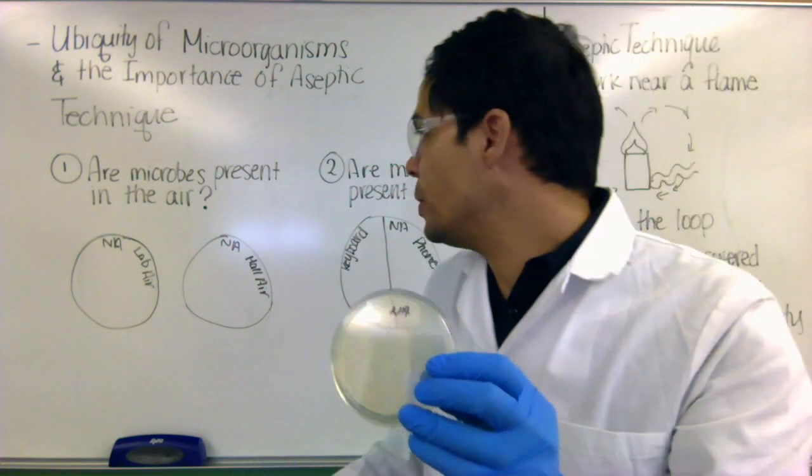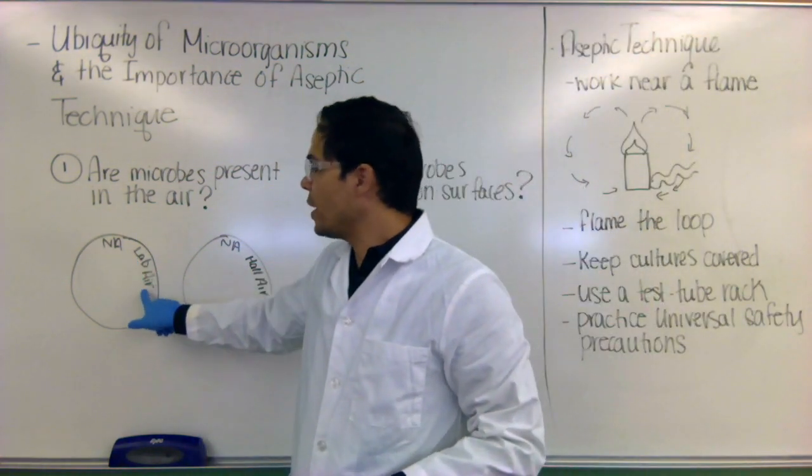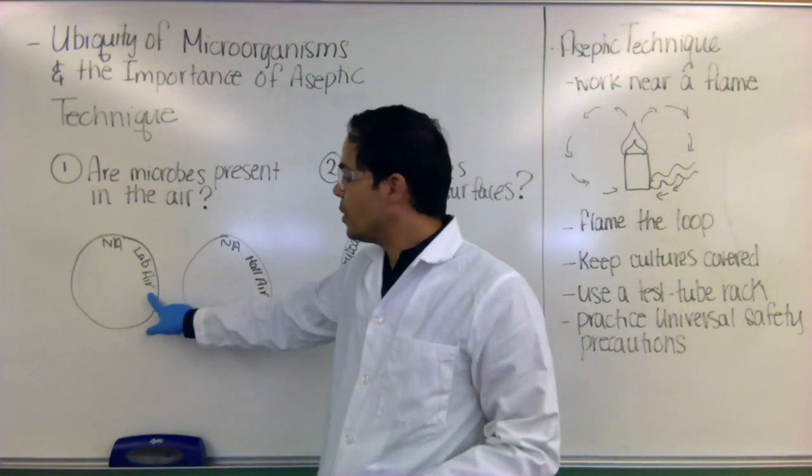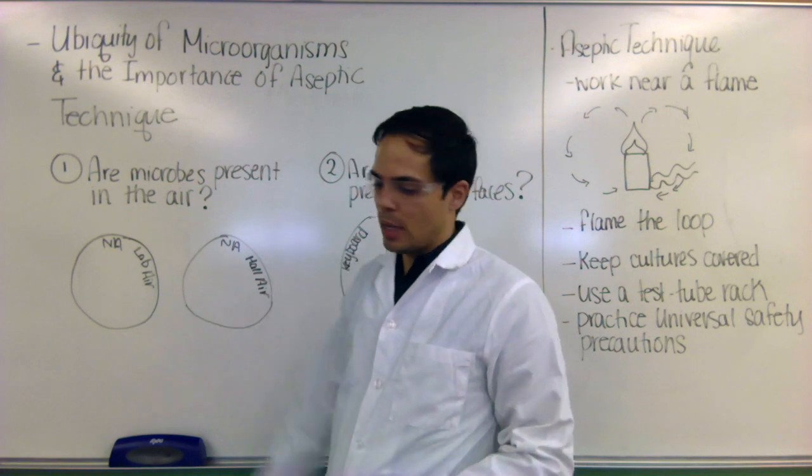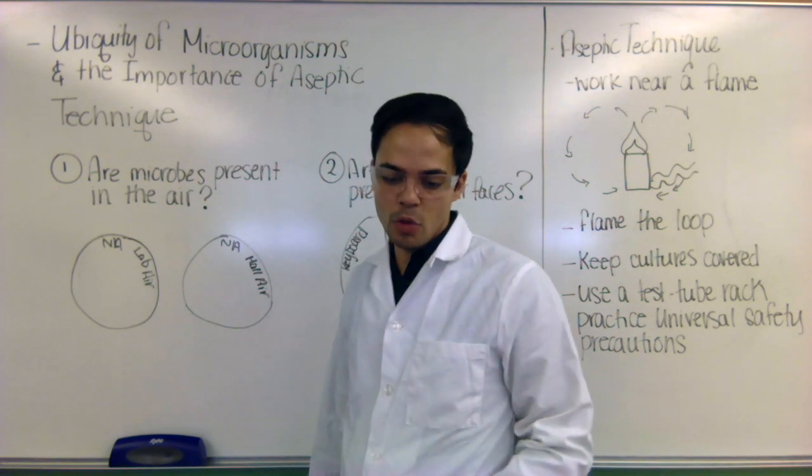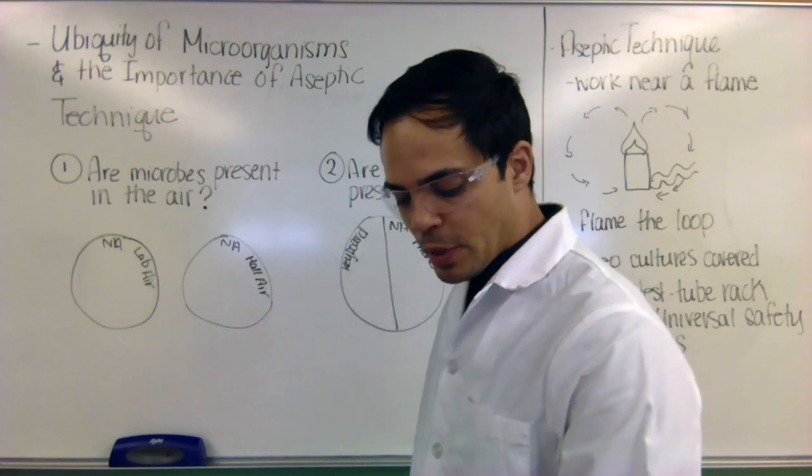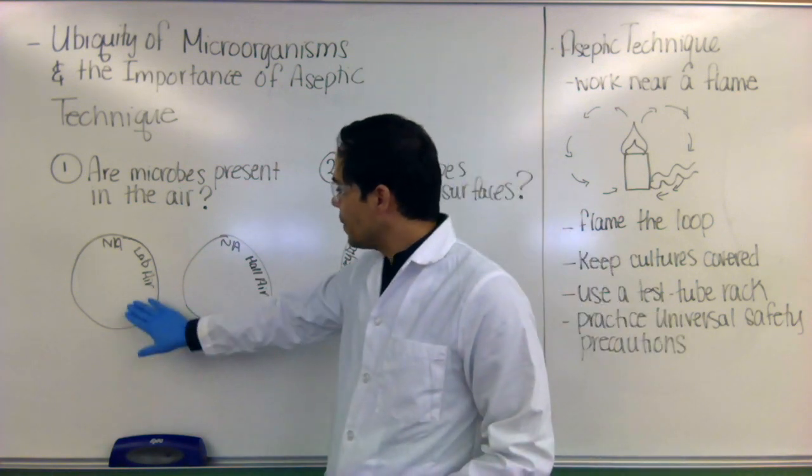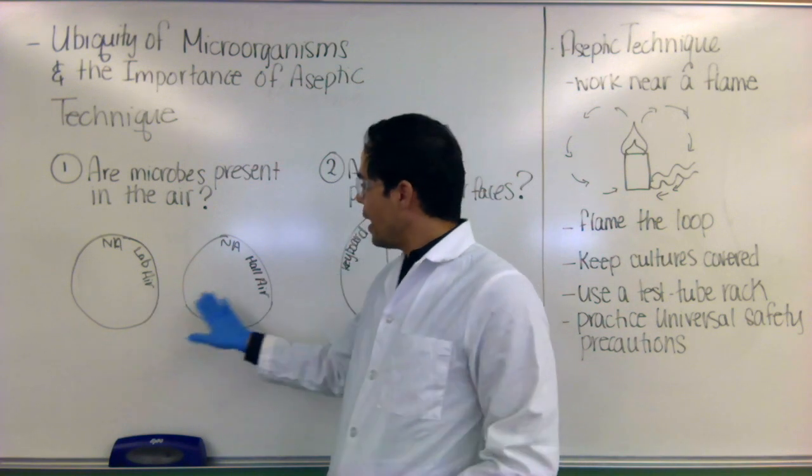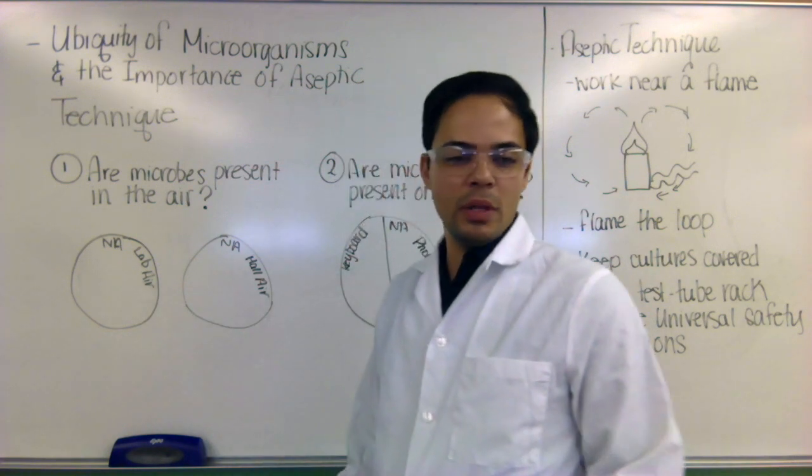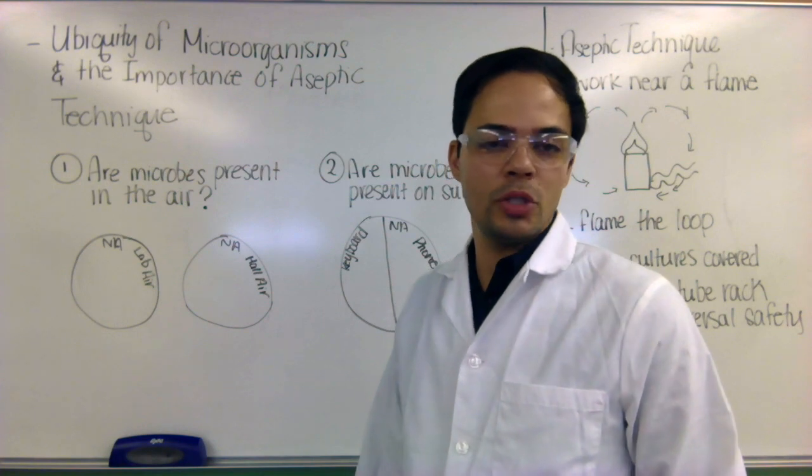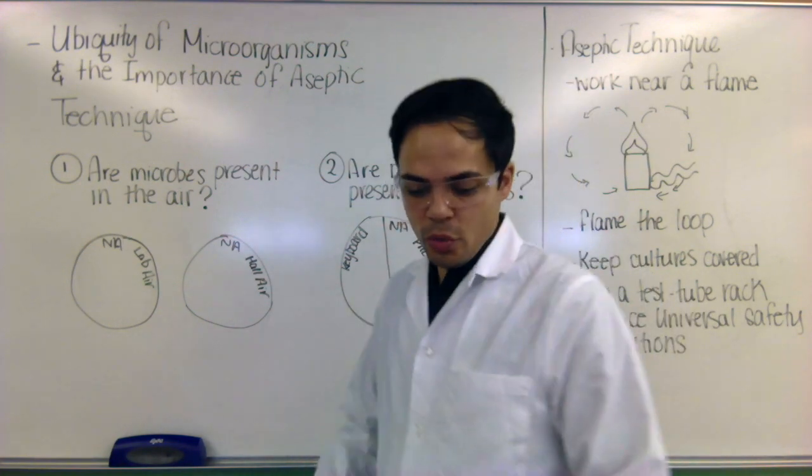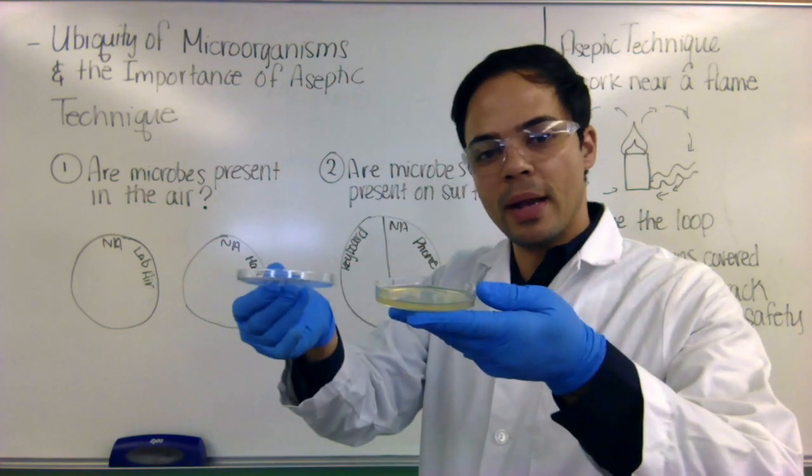So you label the side that actually has the medium in it, the base. So this is NA for nutrient agar, but you also want to write there where you're going to be exposing it to. And you probably want to write your initials and the date so that you know how long it's been incubating and that it belongs to you, especially in a laboratory where there may be lots of people working. So I'm going to take one of these, expose it to the air and one in the hallway. We'll leave it there for, you can leave it there anywhere from 20 minutes to an hour.